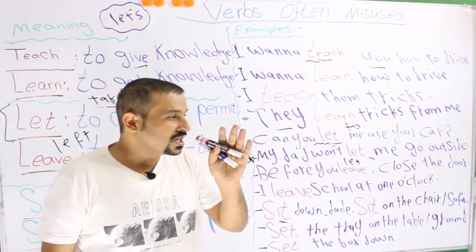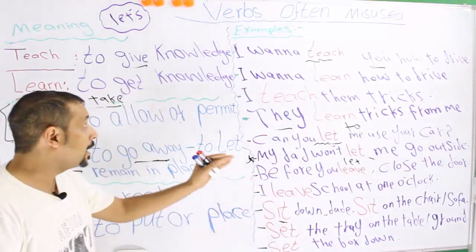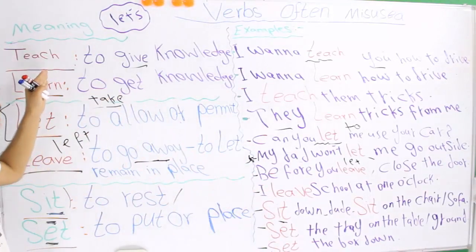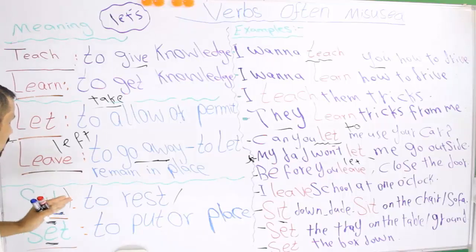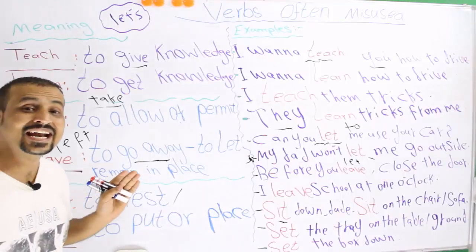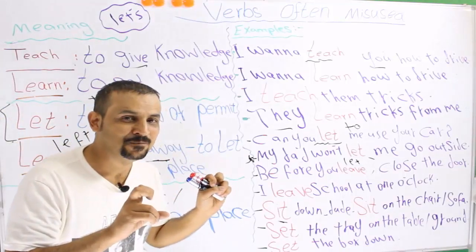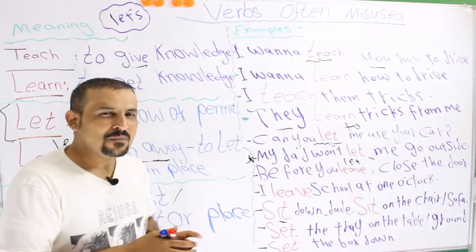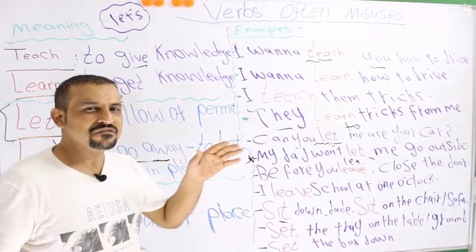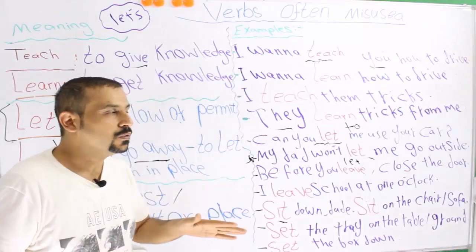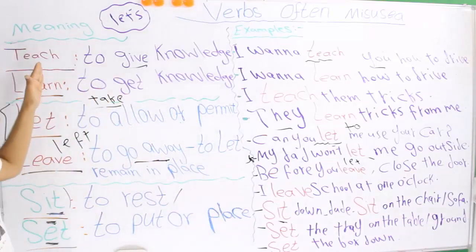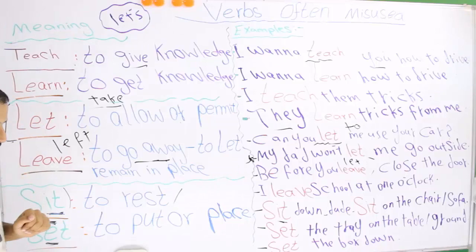So forget about it and try to keep in mind the meaning I show you right now. The confusing verbs of today are: teach, learn, let, leave, sit, and set. I'm going to talk about the first pair, which is teach versus learn.